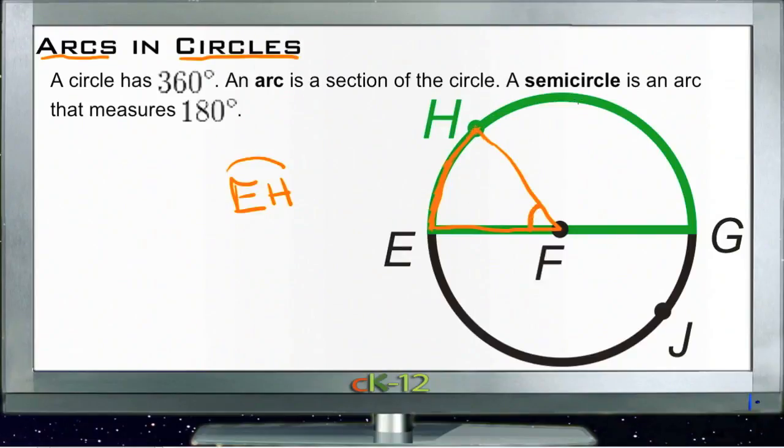This central angle will be the same as the portion of the circumference that the arc has been cut out of. So if we have, say, a 50 degree angle here, then this outside arc, this section from E to H, would also represent 50 degrees. That's 50 degrees out of the 360 that represents the whole circle.